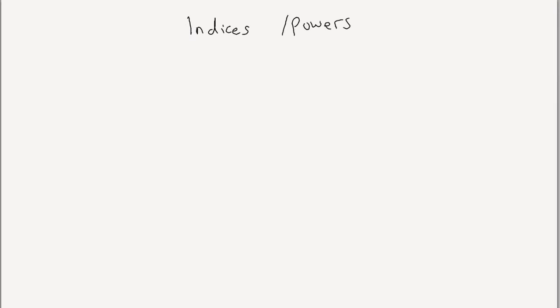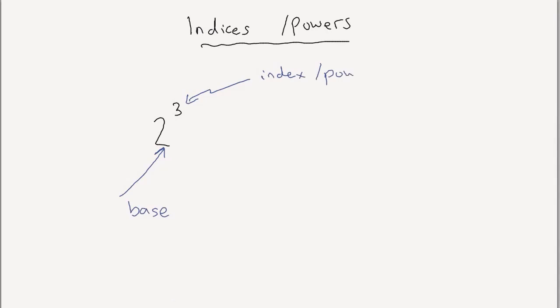We're going to do indices today — indices, or powers, is another name. A simple example: two cubed is an example of using powers or indices. The two is called the base, and the three is called the index or the power. Index is singular; more than one, plural, call it indices. Two cubed means two multiplied by itself three times: two times two times two — two times two is four, times another two gives eight.